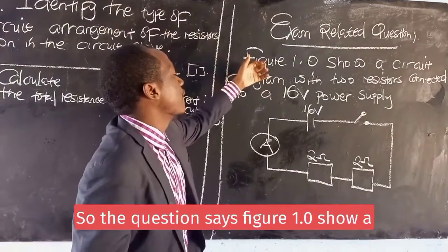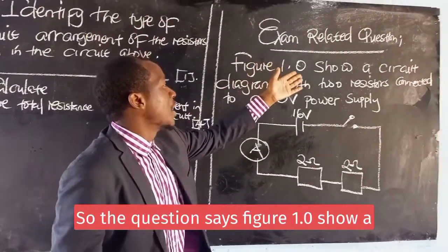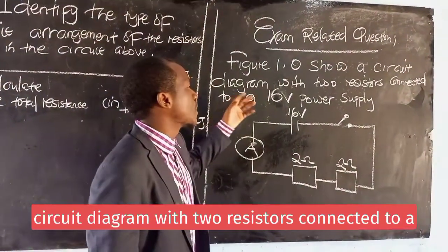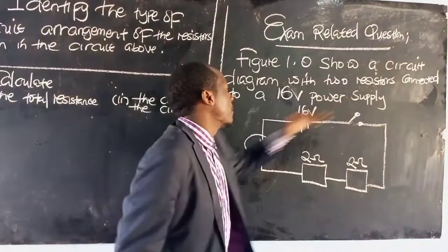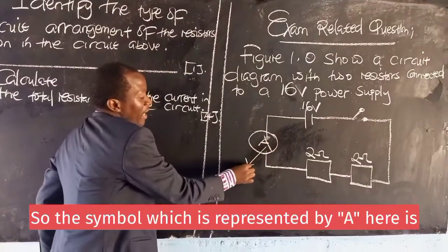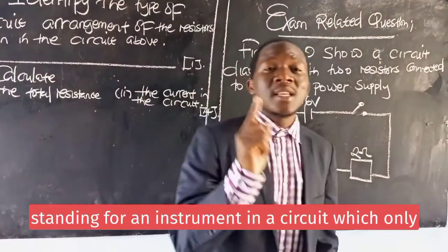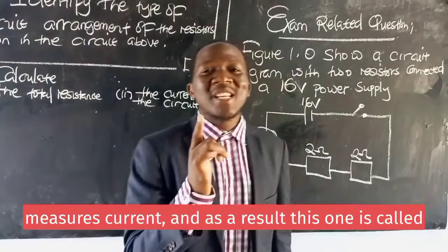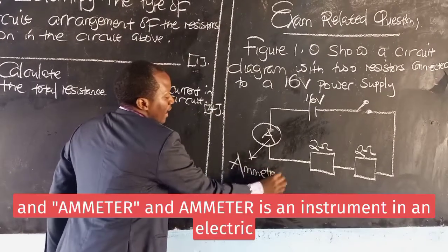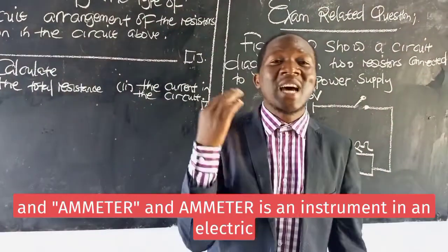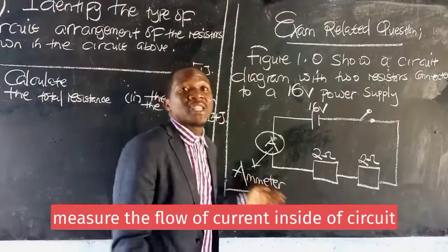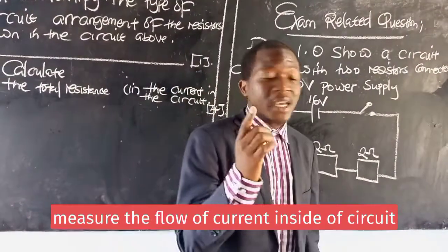The question says figure 1.0 shows a circuit diagram with two resistors connected to a sixteen volt power supply. The symbol represented by A here stands for an instrument in a circuit which only measures current. As a result, this is called an ammeter. An ammeter is an instrument in an electric circuit that can measure the flow of current inside a circuit.